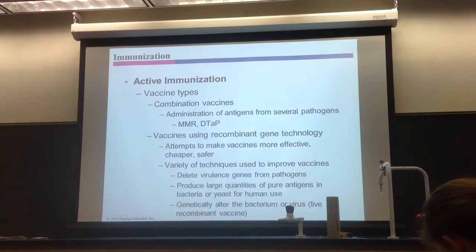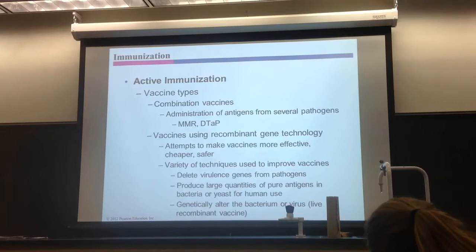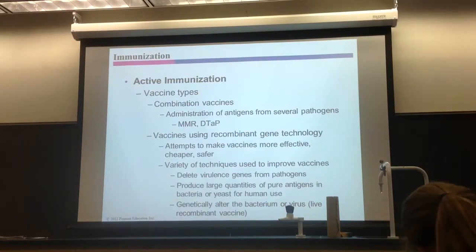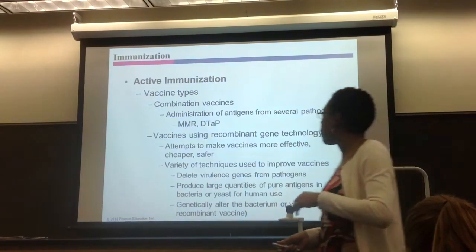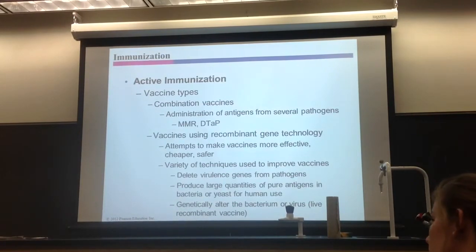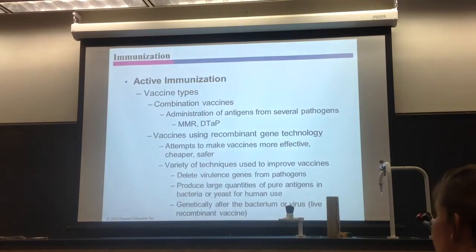Combination vaccines contain combinations of different antigens or pathogens. For example, MMR stands for mumps, measles, and rubella — three in one. DTaP is diphtheria, tetanus, and pertussis — also three in one. These are combination vaccines.